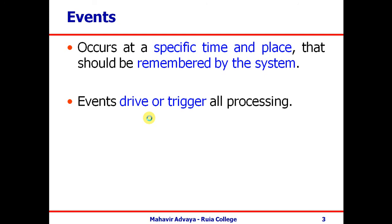In a student management system, a student inquiring or filling the form are manual parts — the student talks to a clerk and fills an inquiry form. These are manual processes. But when the student comes for admission and the clerk accepts the admission form, the student interacts directly with the system. 'Student takes admission' becomes an event, and it triggers the activity 'add new student' because the student's details are entered into the information system.